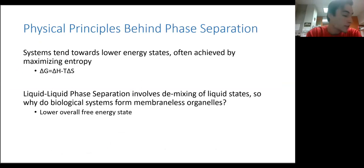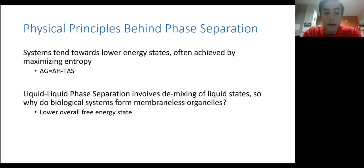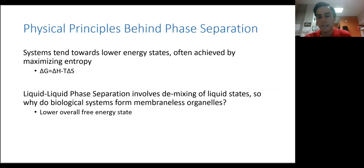Some of the physical principles behind why these condensates actually form are quite interesting. In general, systems tend towards lower energy states, which is often achieved through maximizing entropy, though contributions to energy states are both enthalpic and entropic. Typically in complex multi-component systems like those seen in biology, the components actually mix, as this allows for greater possible combinations of molecular makeup — they maximize their entropy.